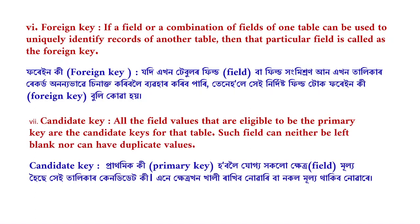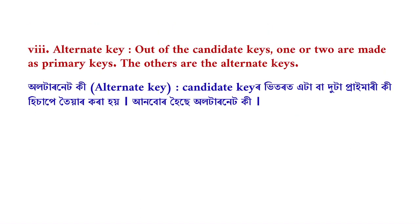Next term: Candidate Key. All the field values that are eligible to be the primary key are the candidate keys for that table. Such fields can neither be left blank nor can have duplicate values. The one selected as the primary key becomes the primary key; the others are the Alternate Keys.